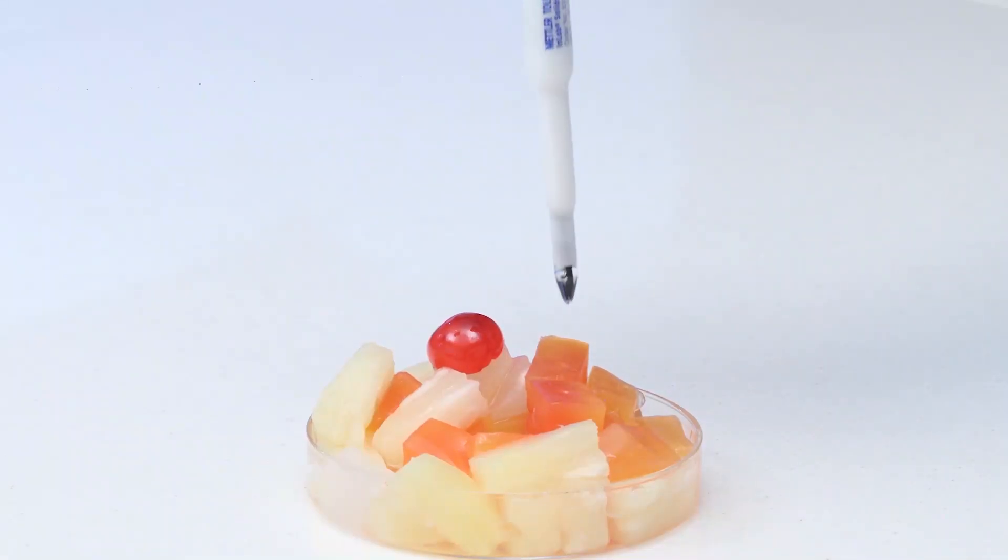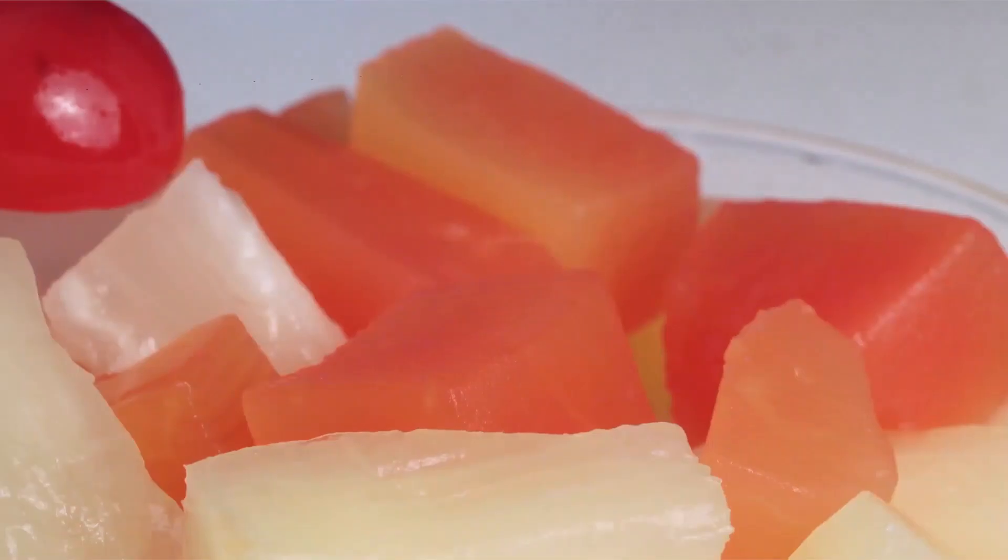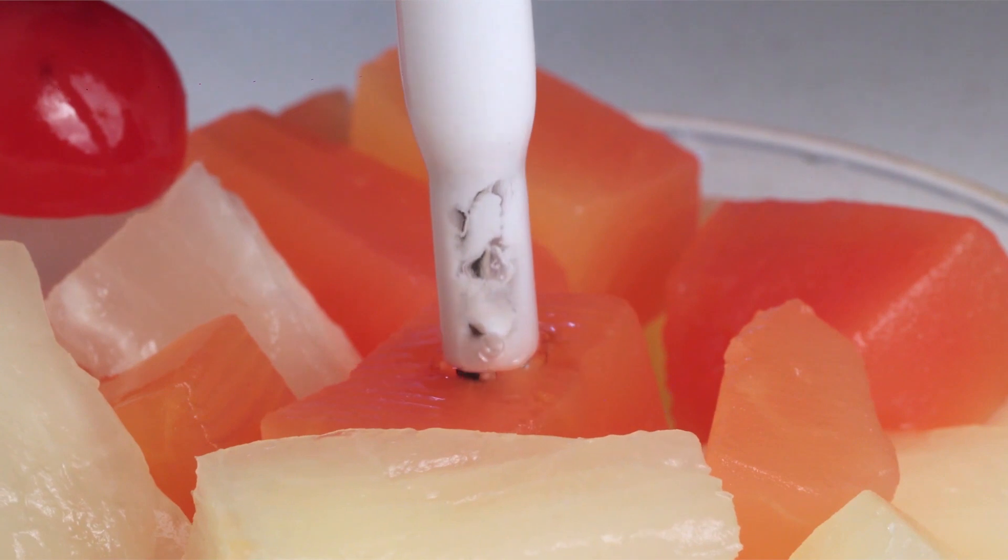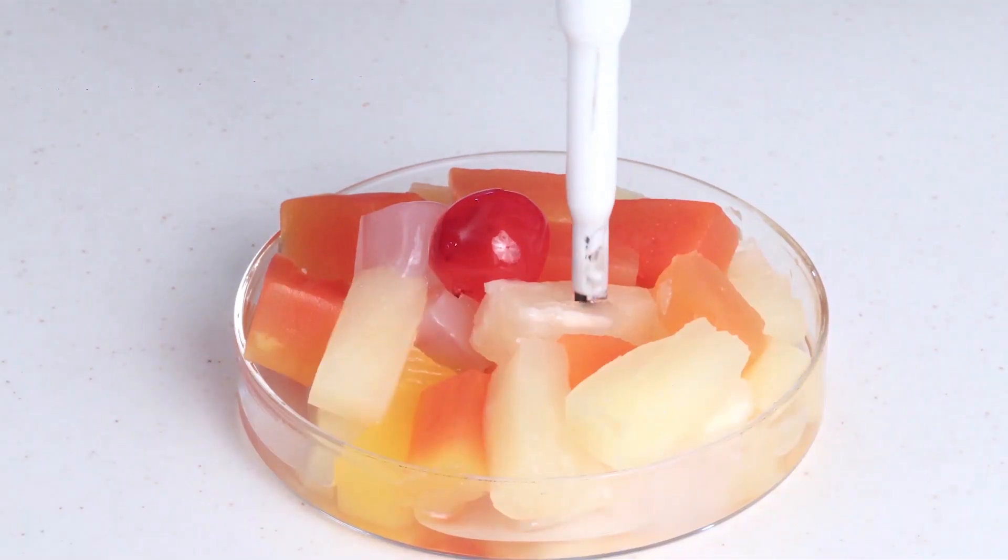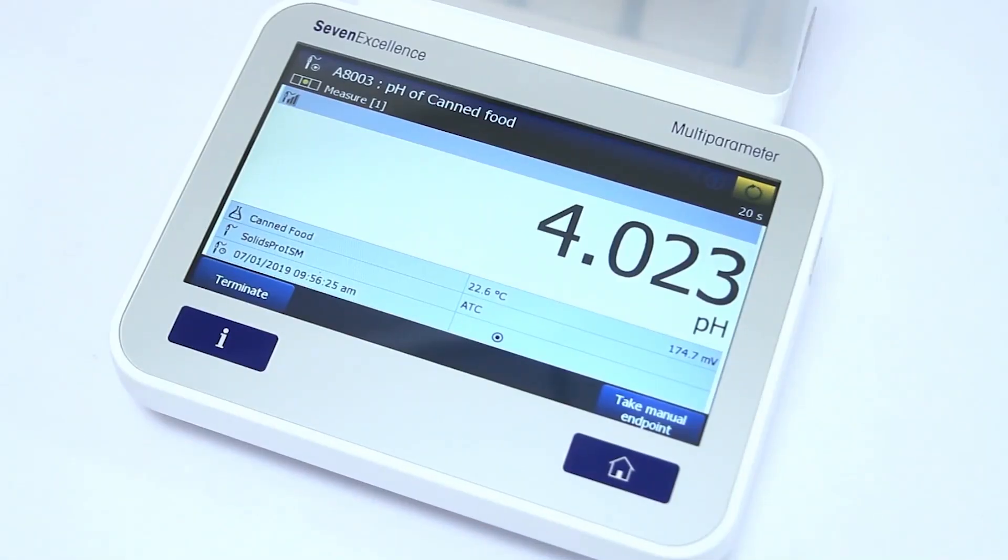Measure the pH by gently inserting the electrode into the sample. Make sure that the open junction is completely immersed into the sample. Repeat the measurement in triplicate at various positions to obtain a representative pH reading.